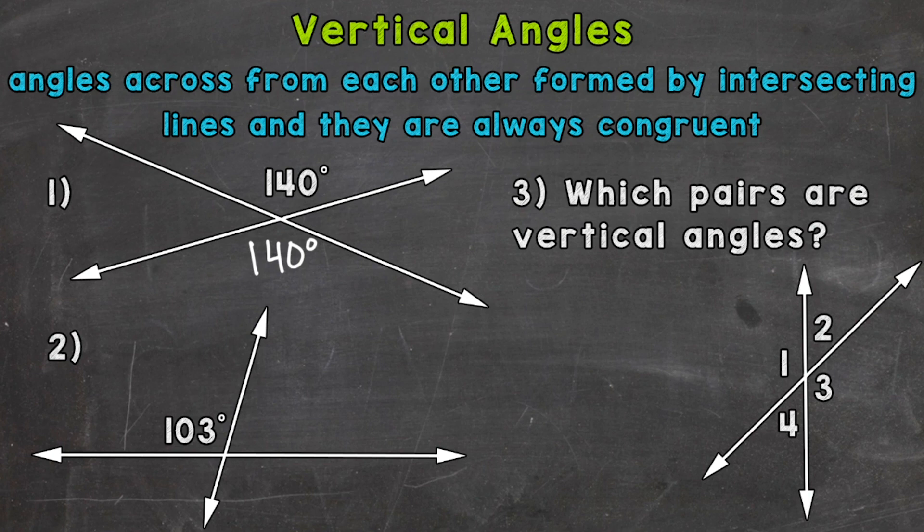On to number two where we are given 103 degrees there for that angle. So let's find which angle would be vertical to that and it's going to be the one right across or opposite from it right here. And again it's going to be congruent. So the same angle measure of 103 degrees.